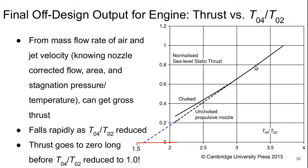We see a deviation between the choked and unchoked behavior. Extending the unchoked behavior, the thrust goes down to zero long before T0.4 over T0.2 becomes 1 — around T0.4 over T0.2 of 1.6 to 1.7, extrapolating from the data. This would be essentially the idle point for the engine, where you're adding just enough fuel to keep it operating but not producing any thrust. Anything below that would result in unsustained operation and the engine would shut down.